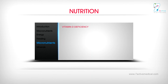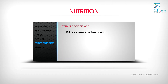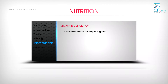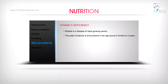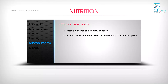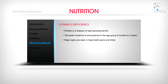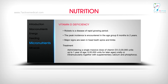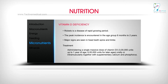Rickets is a disease of the rapid growing period, with peak incidence in the age group 6 months to 2 years. Major signs are seen in the head, teeth, spine, and limbs. Treatment involves administering a single massive dose of vitamin D3 — 300,000 units up to 1 year of age, and 600,000 units for later ages — orally or intramuscularly, together with supplementary calcium and phosphorus.